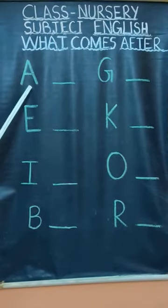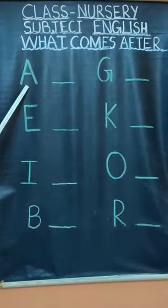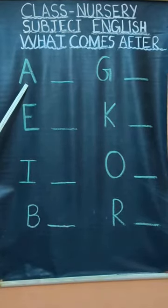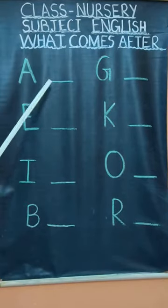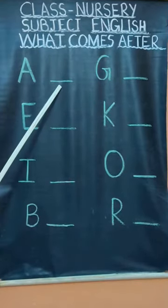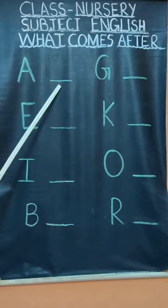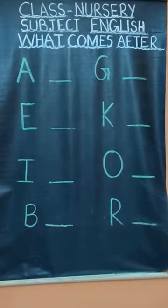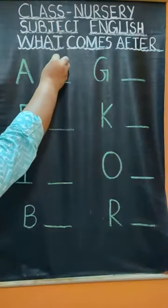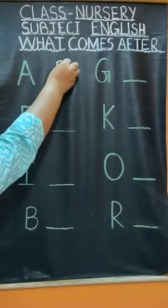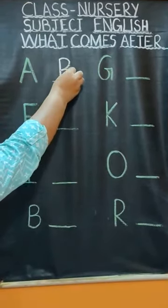First of all, tell me, what is this? This is A for Apple. Very good. Now tell me, what comes after A? Very good — B. So you will write B on the blank space.